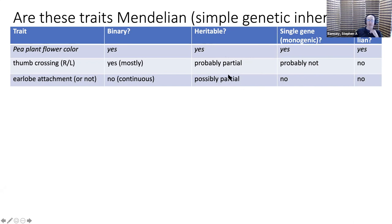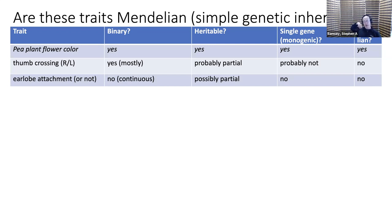This is a good time to revisit the question a student may ask: if a trait isn't entirely determined by genetics, if the phenotype isn't entirely determined by the genotypes inherited from parents, what else controls the development of that phenotype? Of course, environment would be the answer.